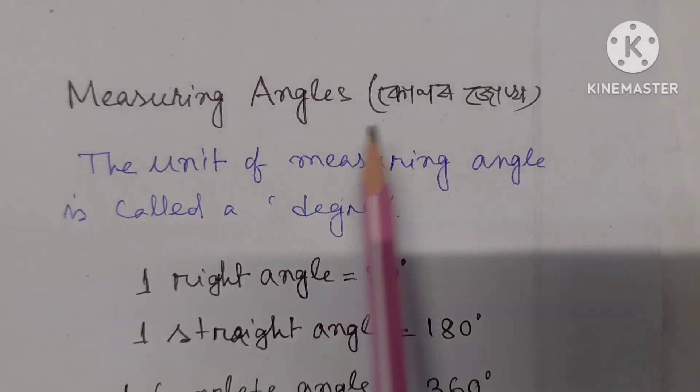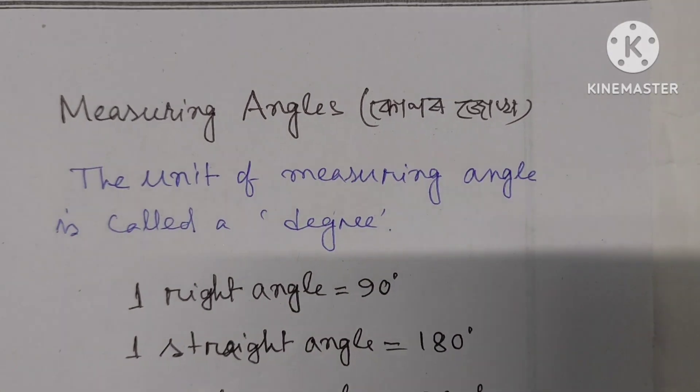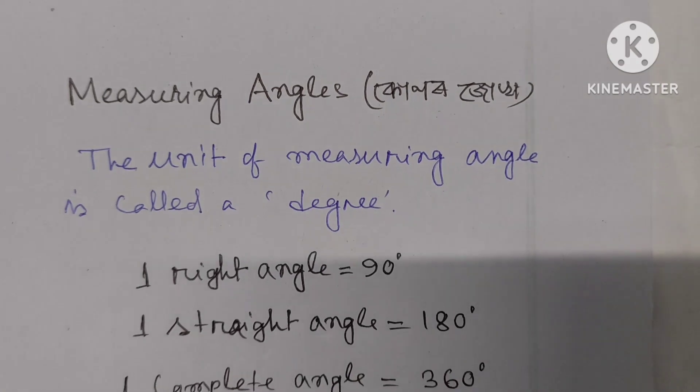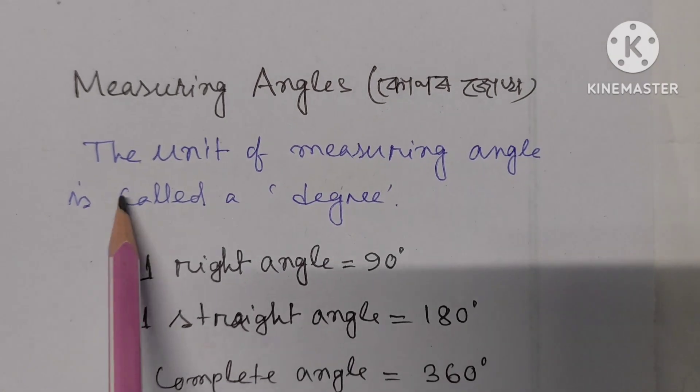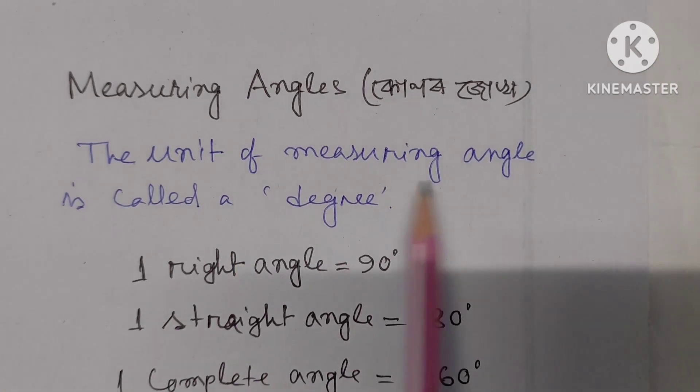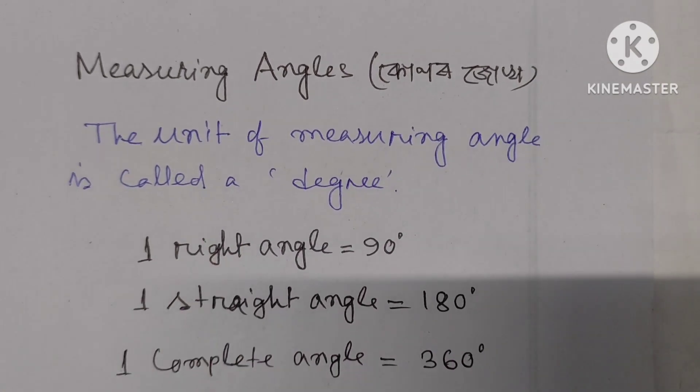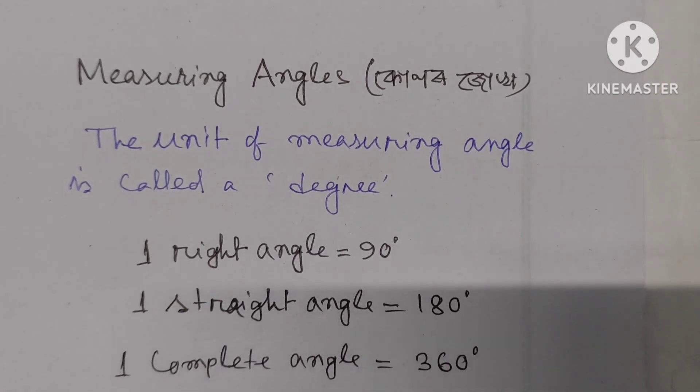Measuring Angles. We know that the unit of measuring an angle is called a degree.